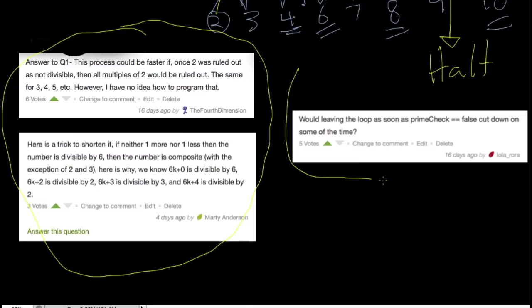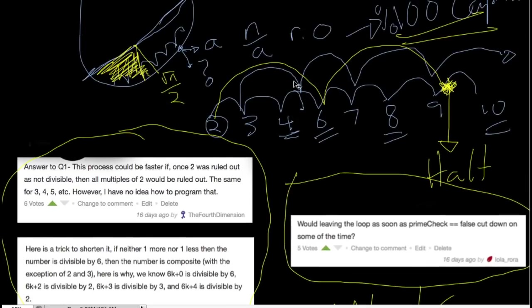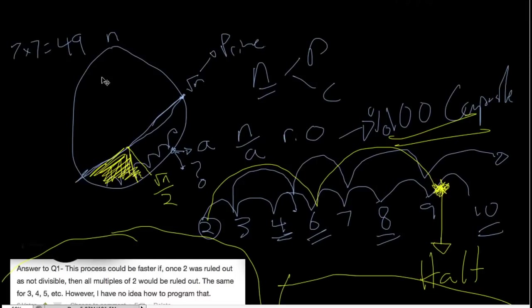And this halting early is great, except it doesn't help us in the worst case, which is if n is prime, then the early halting won't help us. And now we can visualize how these improvements allow us to reduce the space, thus preventing as many checks happening inside the computer, which depending on our computer will reduce the amount of time it takes.